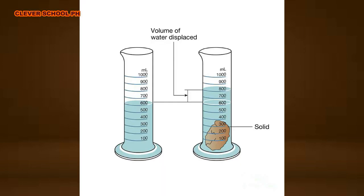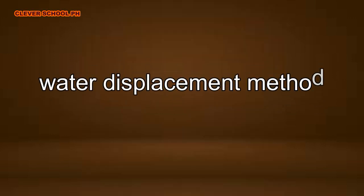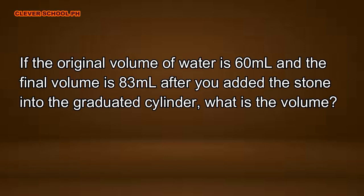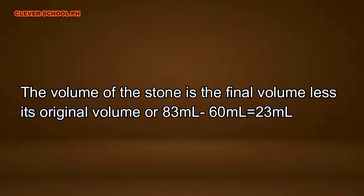In measuring the volume of irregularly shaped solids, you use the water displacement method. First, measure a definite volume of water in the graduated cylinder. Then carefully drop a small stone into the graduated cylinder — you will observe that the volume of water will rise. To get the volume of the stone, subtract the initial amount of water from the water level after the stone was dropped. For example, if the original volume of water is 60 mL and the final volume is 83 mL, the volume of the stone is 83 mL minus 60 mL, which equals 23 mL.